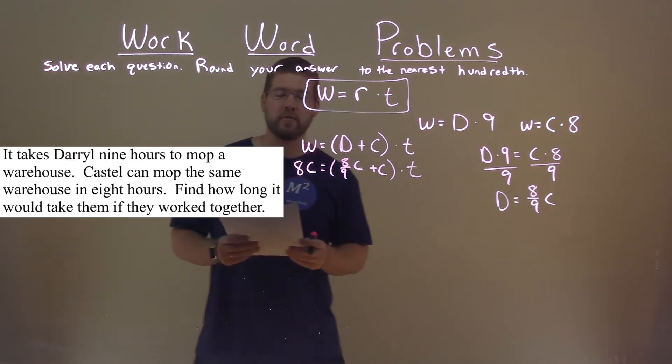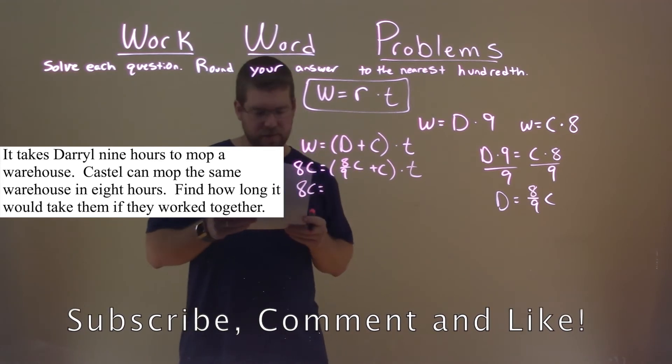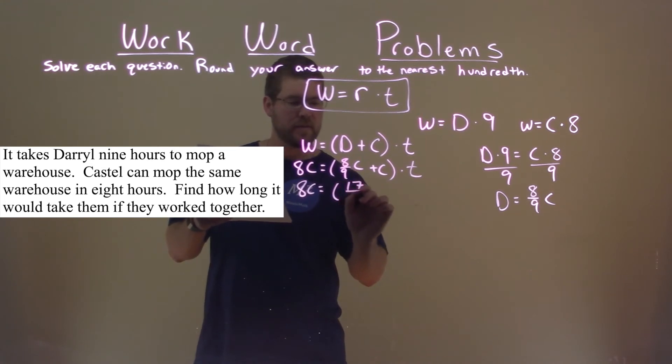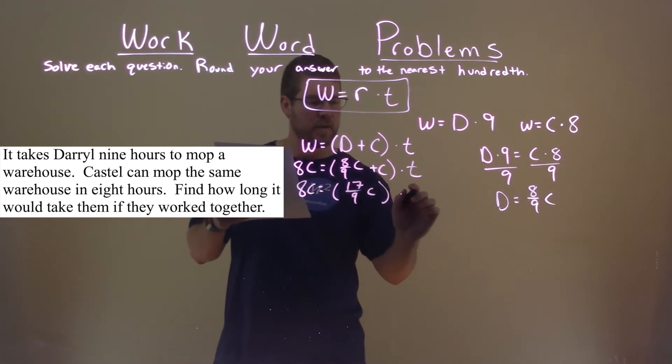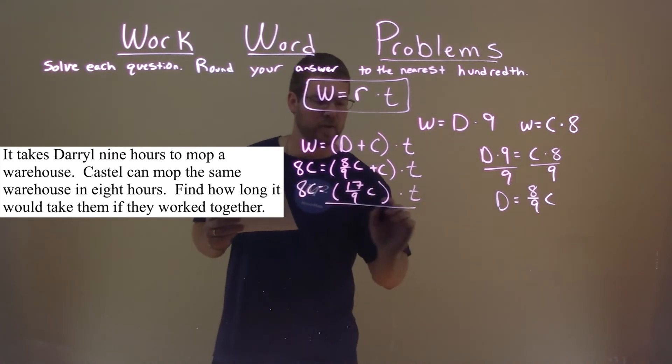So, now let's solve for T. Eight C stays here, and eight ninths C plus one C equals seventeen ninths C, and that's still multiplied by time. To get time by itself, we divide both sides by seventeen ninths C.